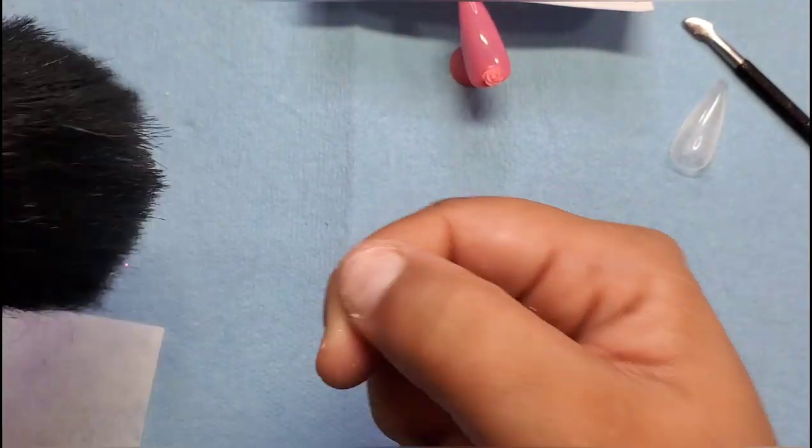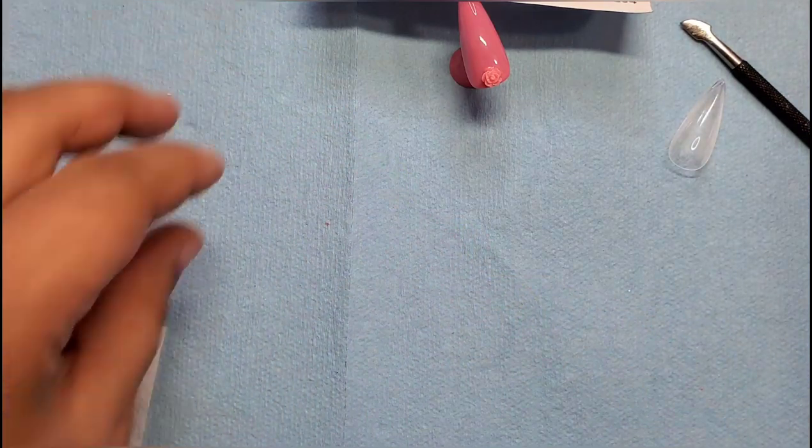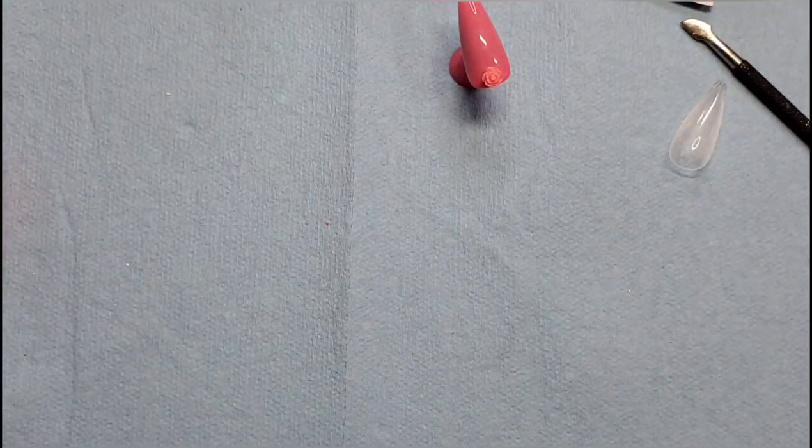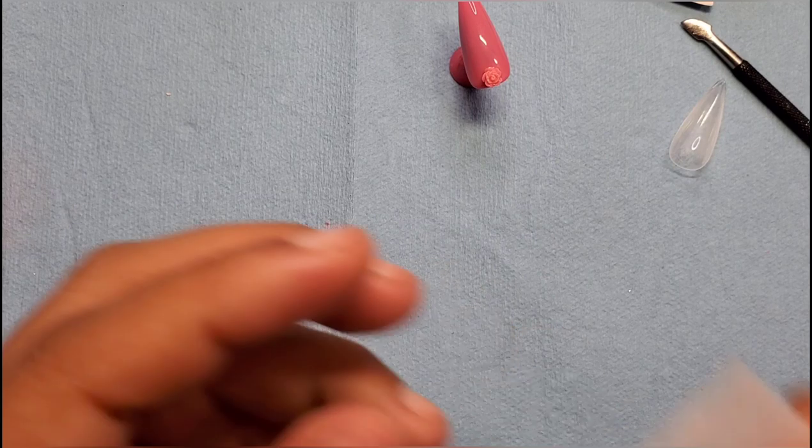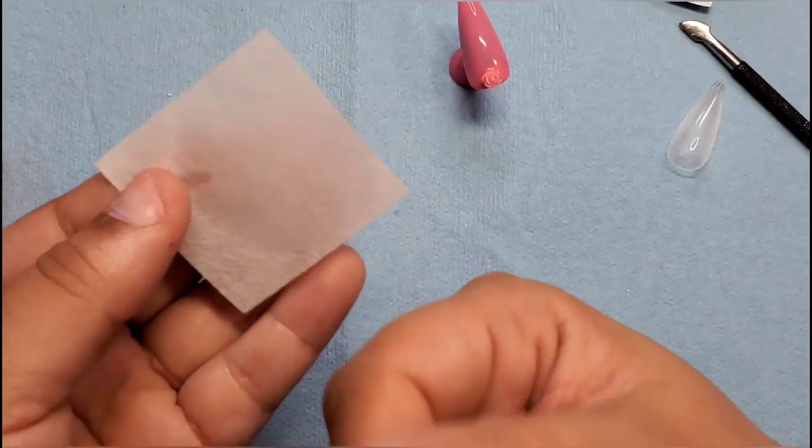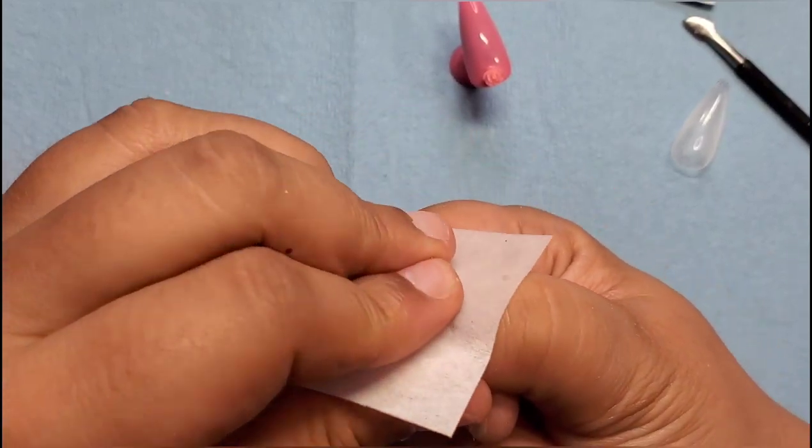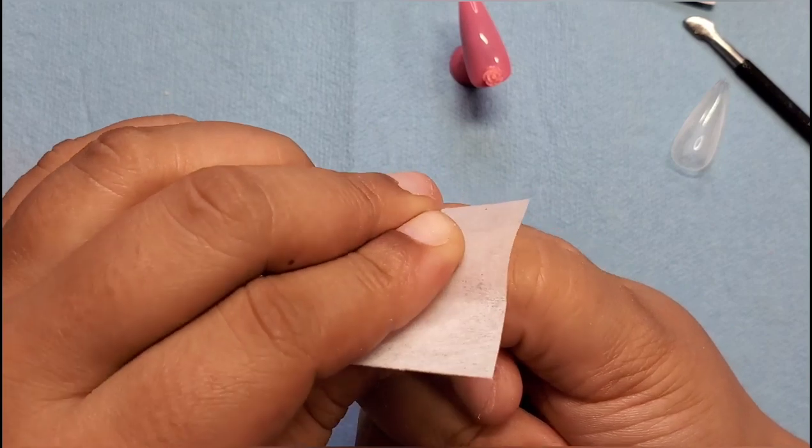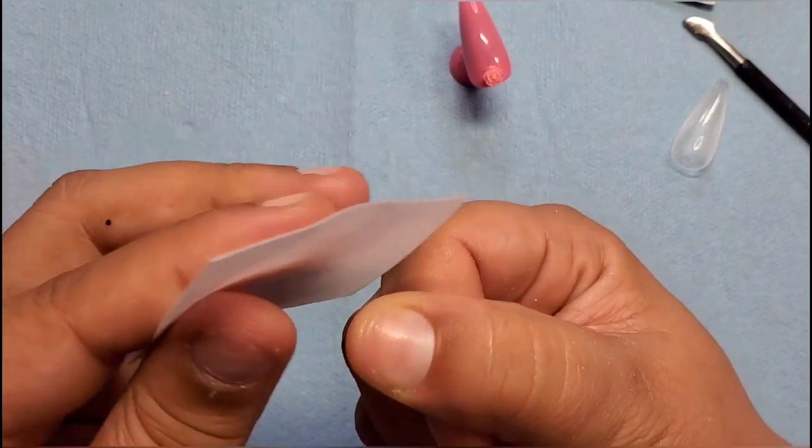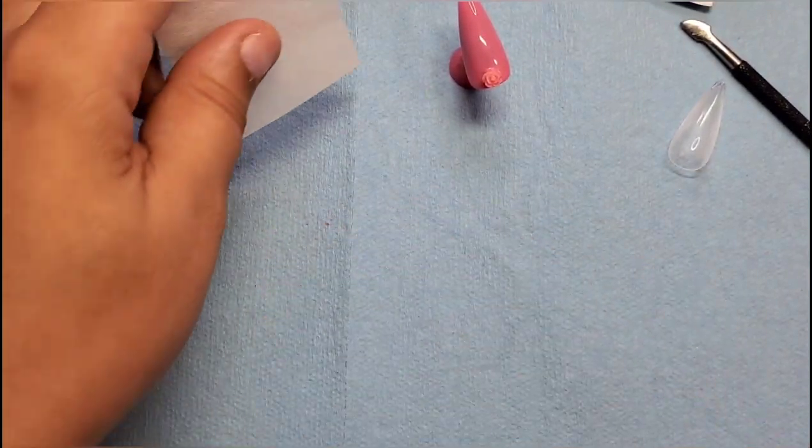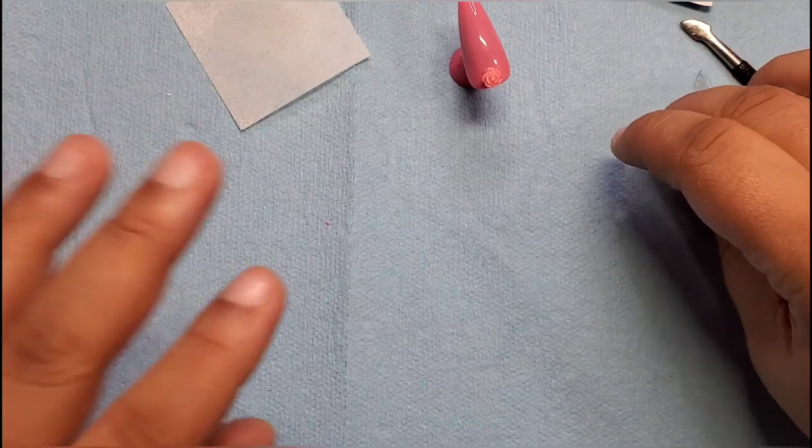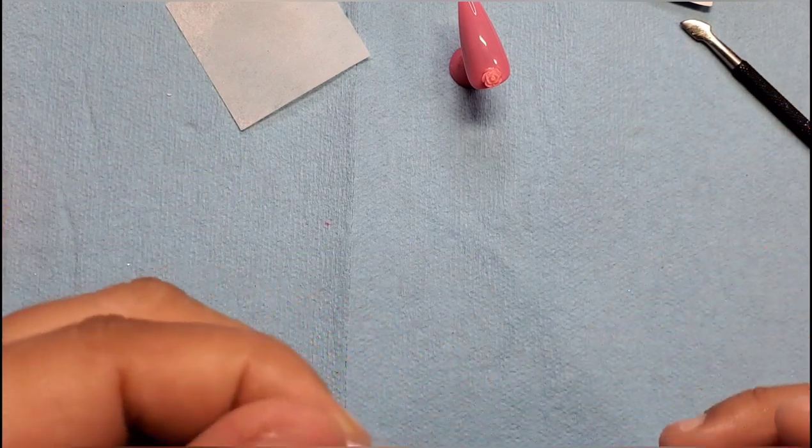Then you would remove the dust. If you don't have one of these, you can also take your alcohol prep wipe. You want to wipe that down. If you don't have alcohol you can use acetone. You want to wipe down your nail really good before doing this.